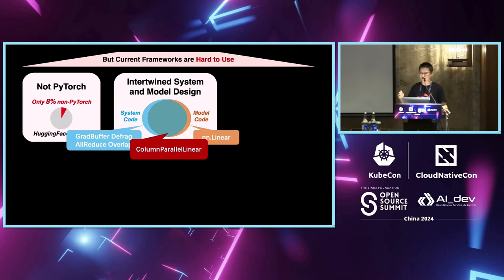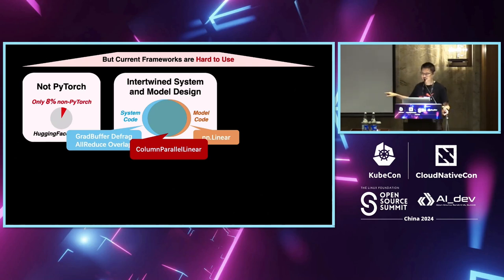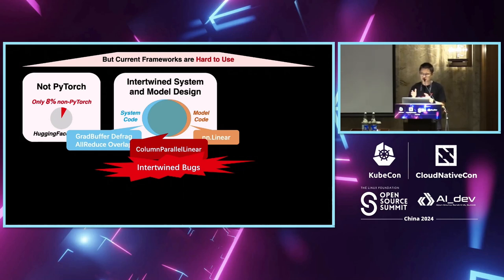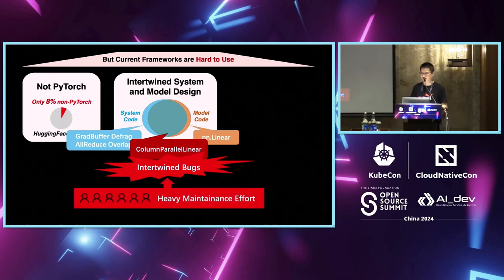This adds a lot of burden to machine learning people. When you add a linear layer, you also have to think about whether it should be row-parallel or column-parallel, plus manage many system arguments inside column parallel linear. That makes model design very hard. The same problem exists the other way: system people trying to improve MFU can easily touch model code, leading to intertwined bugs that require a lot of human effort to maintain.